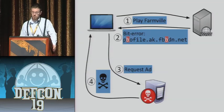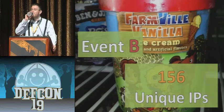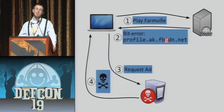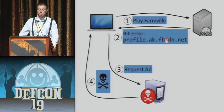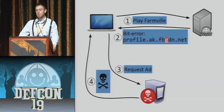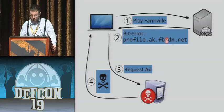Event B was 456 unique IPs, and the cause was also FarmVille. You would play FarmVille, a bit error changes fbcdn.net to fbgdn.net, this bit error gets cached somewhere in the FarmVille cache, and gets served up to 130 different people who request ads from me. Of course, you don't have to send them ads — I chose to send 404s, but there's no reason somebody malicious couldn't send them some choice JavaScript.